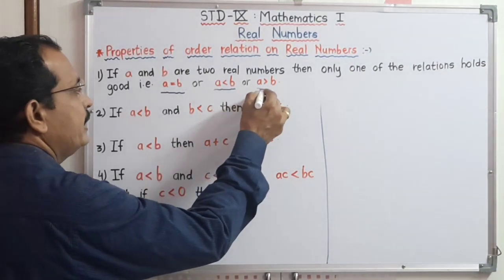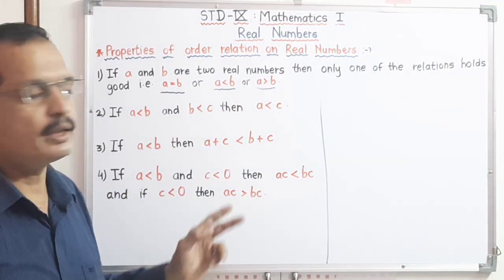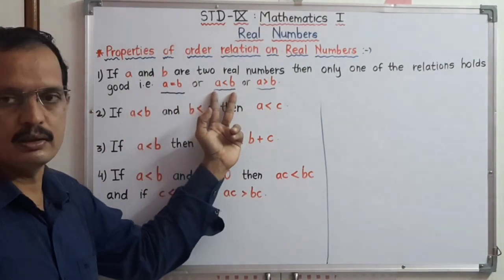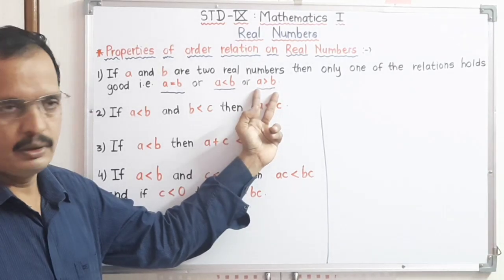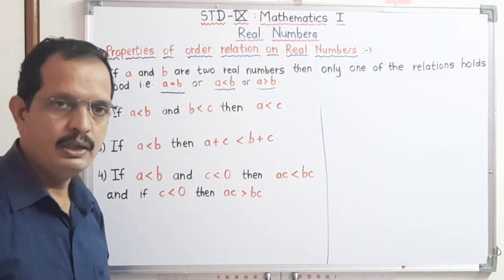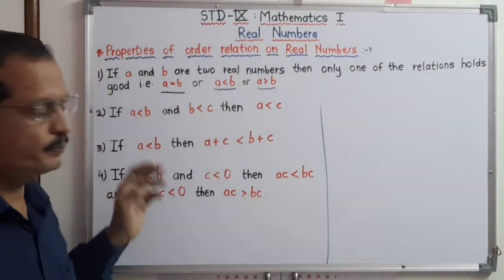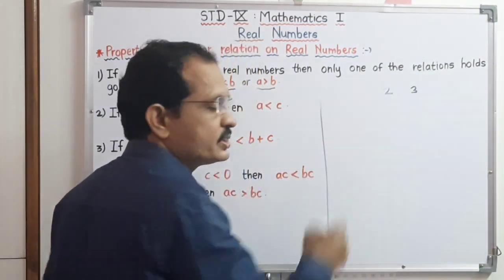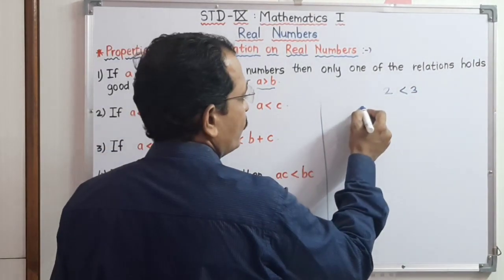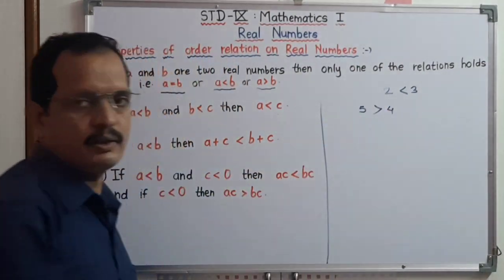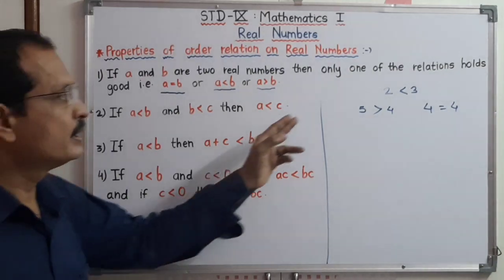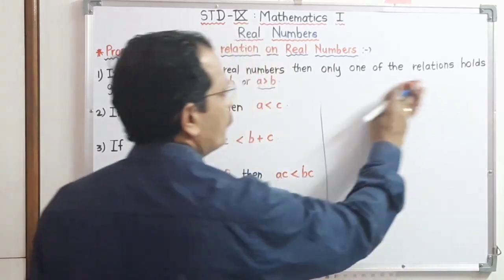For example, if two numbers are 2 and 3, then the condition that follows is: 2 is less than 3. If it is 5 and 4, then 5 is greater than 4. Or if both are the same, like 4 and 4, then 4 equals 4. So out of these three conditions — A equal to B, A less than B, A greater than B — only one is correct for any given pair of real numbers.